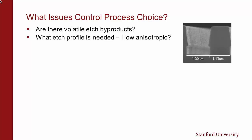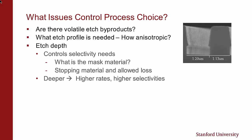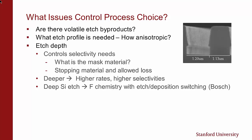First: are there volatile etch products? What etch profile is needed? How anisotropic do I want it? Etch depth controls selectivity — what is the mask material, stopping material, and allowed losses? Deeper depths require higher rates and higher selectivities. If we're talking about really deep etching of silicon, then we can use what we call the deep silicon etch process, which is fluorine-based, switching between etching and deposition. This is known as the Bosch process.